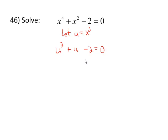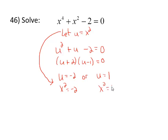This one factors: (u + 2)(u - 1) = 0. This gives me two solutions: u = -2 or u = 1. Then we unsubstitute: x² = -2 or x² = 1. Take the square root of both sides.